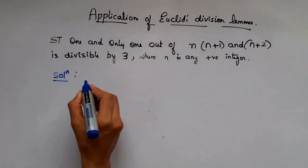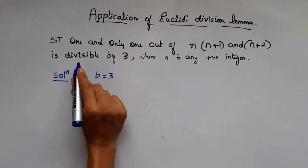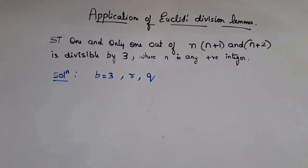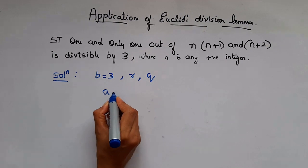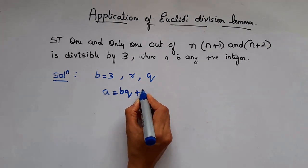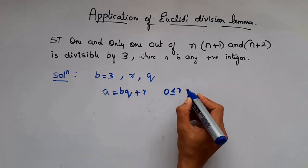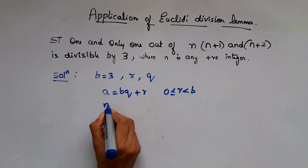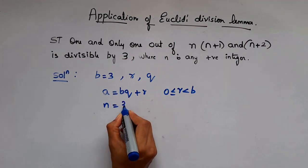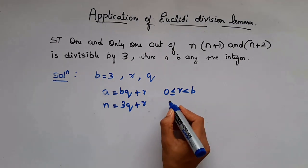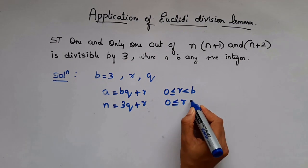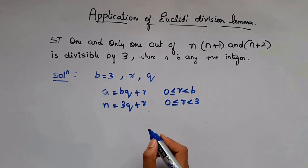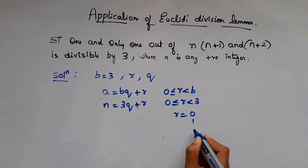Now let's see what is given. B is 3, that is divisible by 3. R is your remainder and Q is your quotient. Now apply Euclid's division lemma: a = bq + r, where r lies between 0 and less than b. In this case, where n is a positive integer, we can take n = 3q + r, where r lies between 0 and less than 3. So r can take the values 0, 1, and 2.